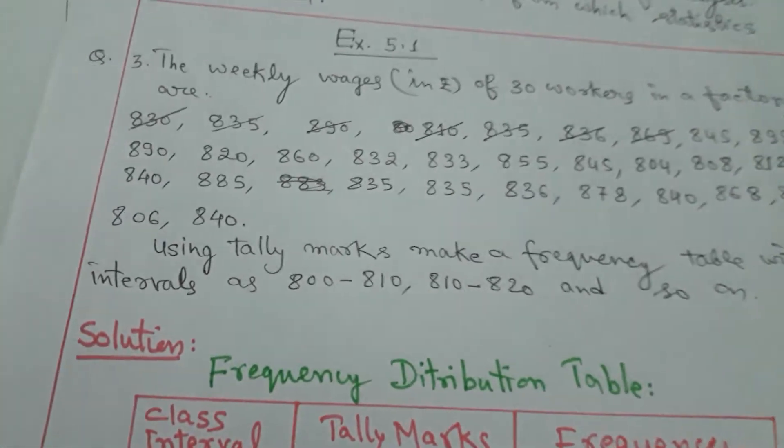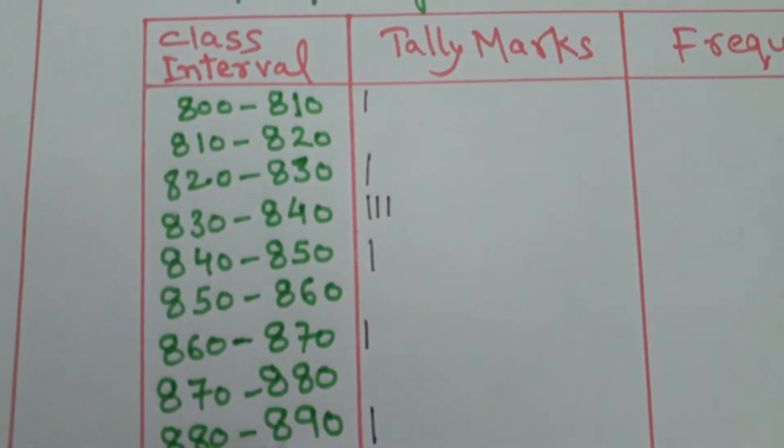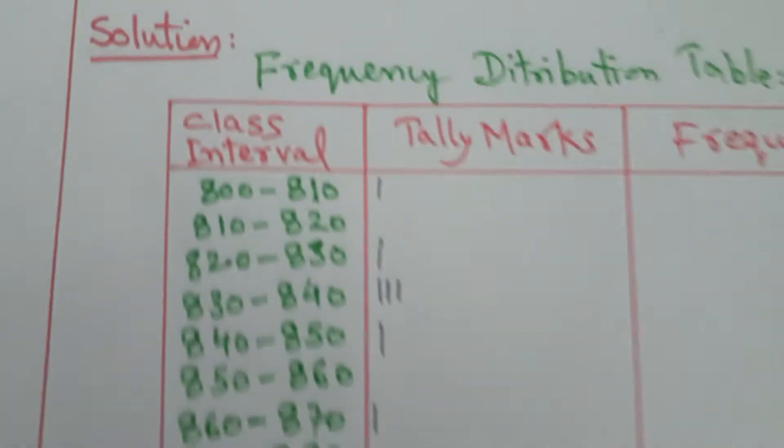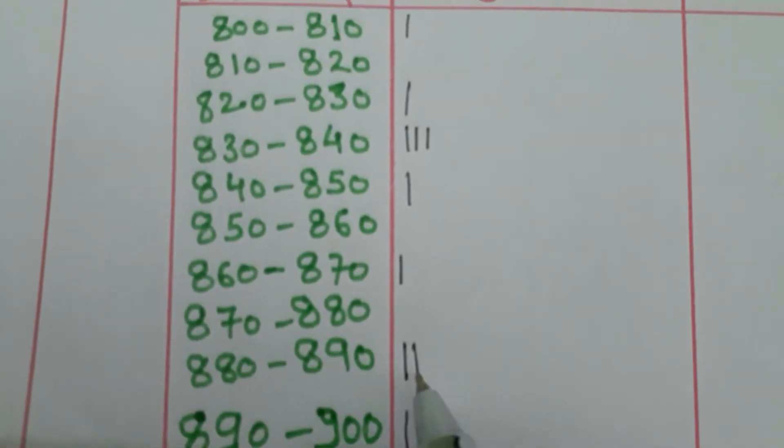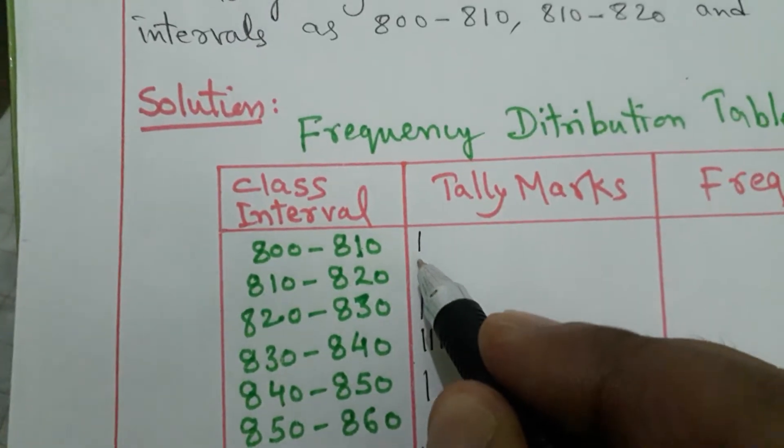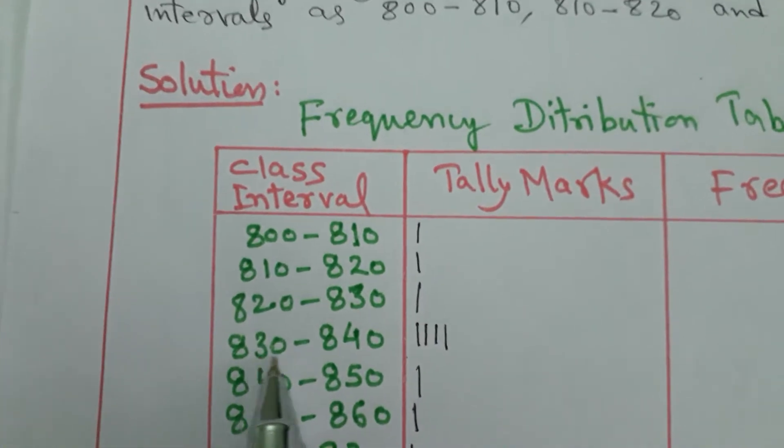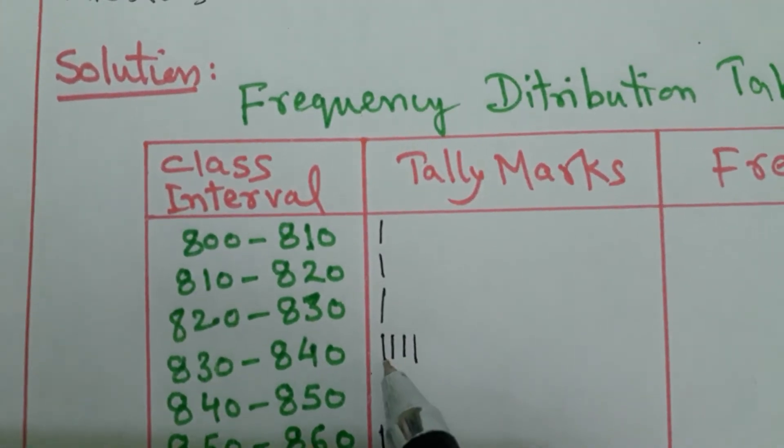869 is here, 845 is here, 898 is here. 890, so you can write here 890. 880 to 890, now one tally here. 820 is here, 860 is here. 832 is here, 833 will be between 830 to 840.